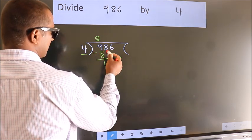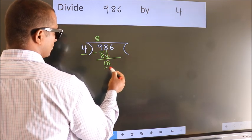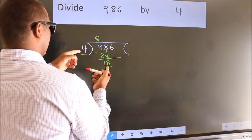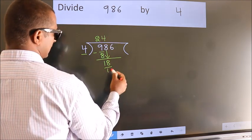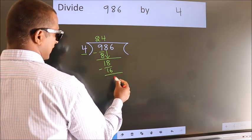After this, bring down the next number. So 8 down, so 18. A number close to 18 in the 4 table is 4 times 4 is 16. Now we subtract. We get 2.